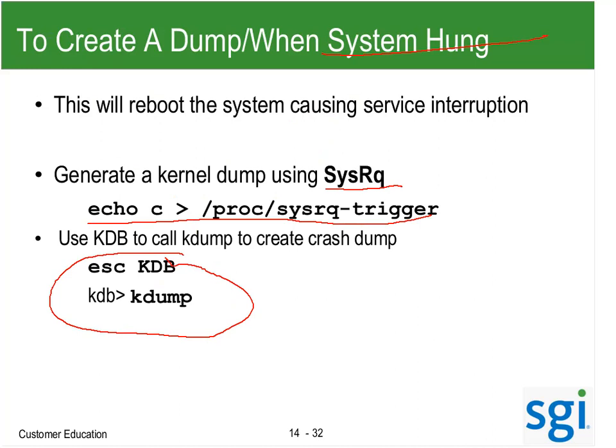I would do an ArchKDB. One thing I'll emphasize: when I have a KDB session, I get out and come back in with SSH — something like 'root@Floyd-CMC' — and pipe it into TEE with a date and time in the filename. That way everything going to my console is being captured in that file, so when I do the ArchKDB, all the output will be saved. If you're working from Windows, the challenge is how far back your PuTTY scroll buffer can go.